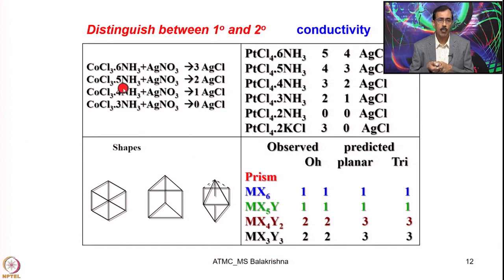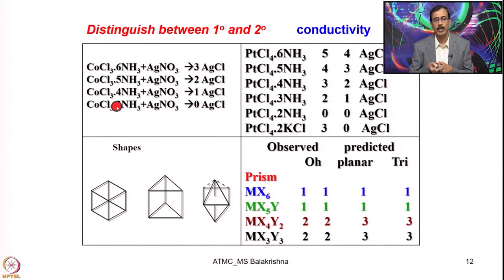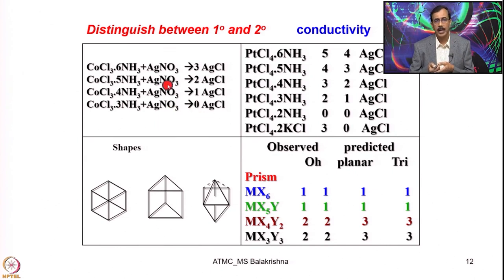Similarly, when he had 4 ammonia inside the coordination sphere along with 2 chloride, 1 chloride was primary valency, resulting in 1 silver chloride precipitation. When he treated cobalt chloride with just 3 equivalents of ammonia, he got a neutral complex having 3 chloride and 3 ammonia as secondary valency, and as a result there was no precipitation. Using this he proposed all of them have octahedral geometry, and could clearly distinguish between secondary and primary valency.